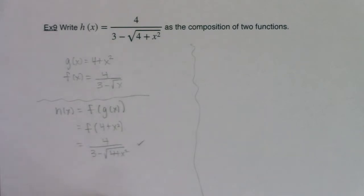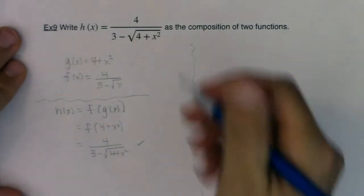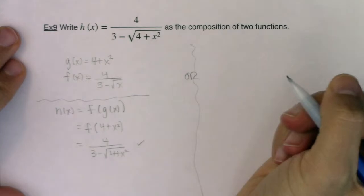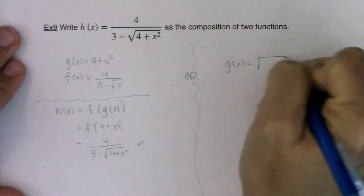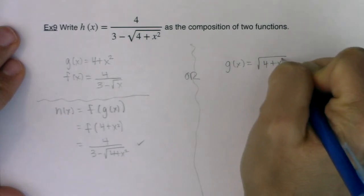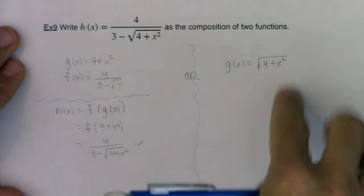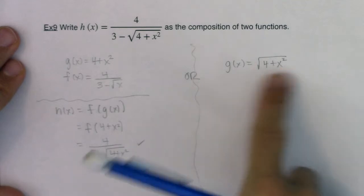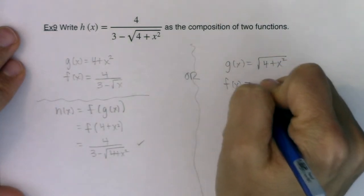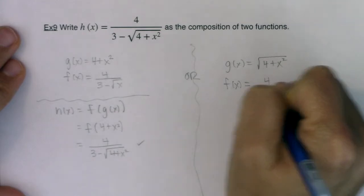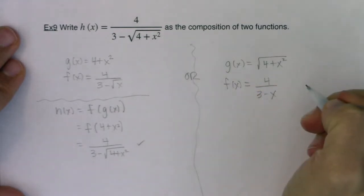And like I said, there are many out here. Let me give you another one. I'll put the word or here. So what if instead I had done g of x was the entire radical expression? That could have been my g. Maybe I picked that to be my innermost function. If I went that direction, then f of x would be 4 over 3 minus x.